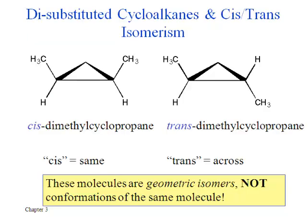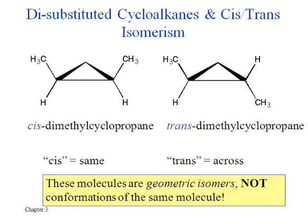This next slide shows the simplest case of a disubstituted cycloalkane: dimethylcyclopropanes where the methyl groups are on adjacent carbons. We're seeing two different isomers of that compound — these are not conformations of each other, because you can't interconvert them just by twisting bonds. The three carbons in the cyclopropane ring are fixed in the same plane. So from that starting point, if you put two methyl groups on the same side, they're both above the ring in the structure on the left — that's a different isomer from having the two methyl groups on opposite sides of that three-membered ring.